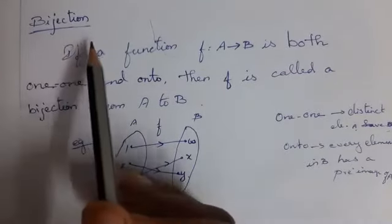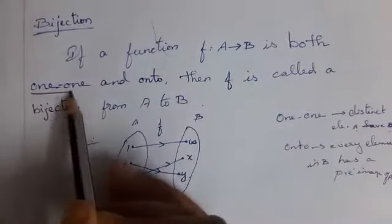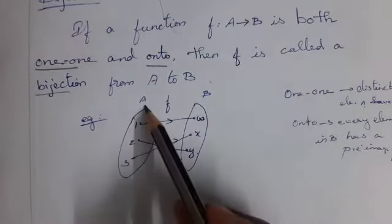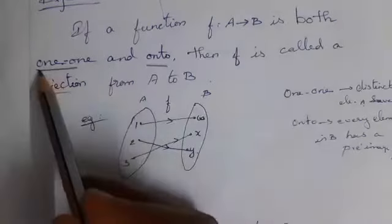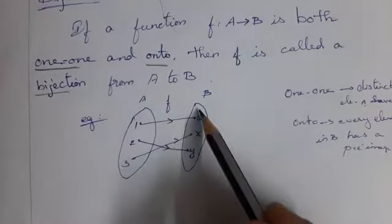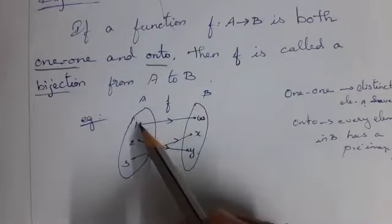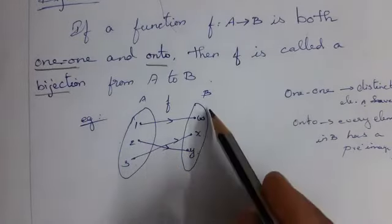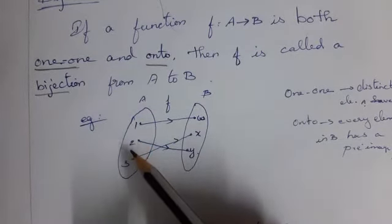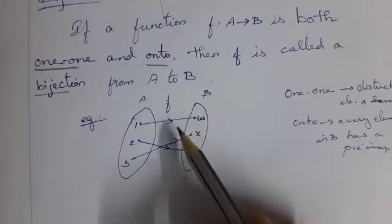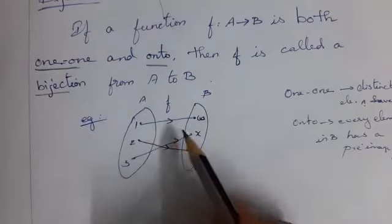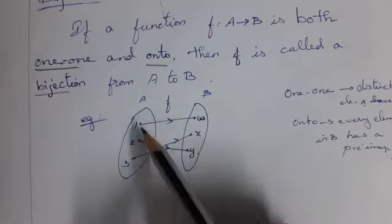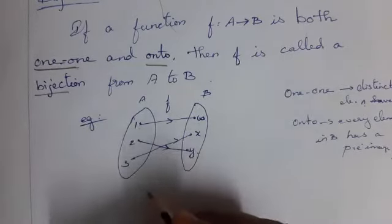Now you know about bijection. If a function f from A to B is both one-one and onto, then f is called a bijection from A to B. See the example: 1, 2, 3 are elements of A; w, x, y, z are elements of B. 1 maps to w, 2 maps to y, 3 maps to x. Every element in A has a distinct image in B — so it is one-one. Every element in B has a pre-image in A — so it is onto. Since both conditions are satisfied, this is a bijection.